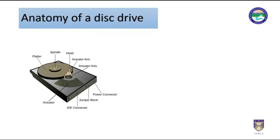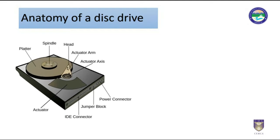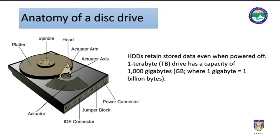A hard disk drive, or hard disk, or fixed disk, is a data storage device used for storing and retrieving digital information using one or more rigid, rapidly rotating disk platters coated with magnetic material. Platters are paired with magnetic heads arranged on a moving actuator arm which read and write data to the platter surfaces. Data is accessed in a random access manner, meaning individual blocks of data can be stored or retrieved in any order rather than sequentially. Hard disk drives retain stored data even when powered off. The primary characteristics of a hard disk drive are its capacity and performance.